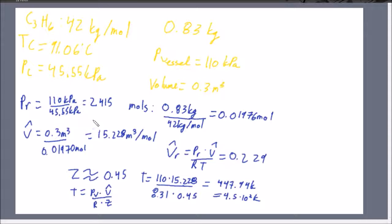Next we're going to find V-hat. V-hat is the volume of the substance per molar basis. If you take 0.3 meters cubed divided by the number of moles we found, we get 15.228 meters cubed per mole.